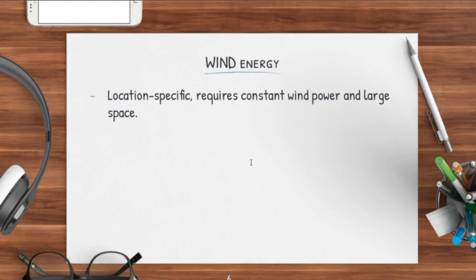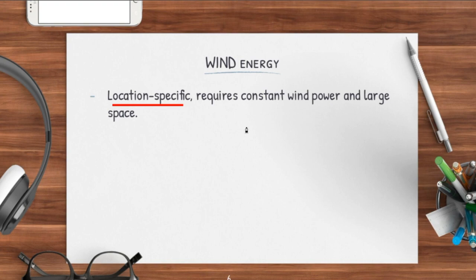The next one would be wind energy. Wind energy is actually location-specific. You need a lot of wind in order to generate wind turbines for wind energy to be produced. It requires constant wind power and large space because wind turbines are huge — they require large land areas. So for countries like Singapore, it would be impossible to have wind energy.